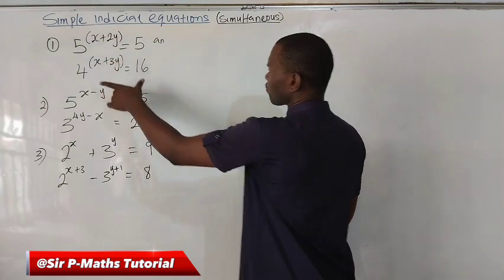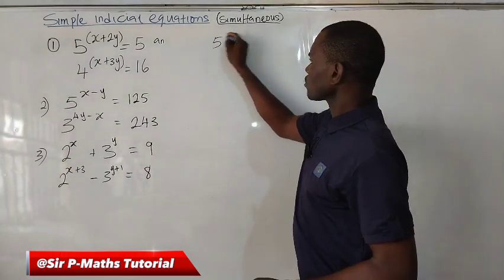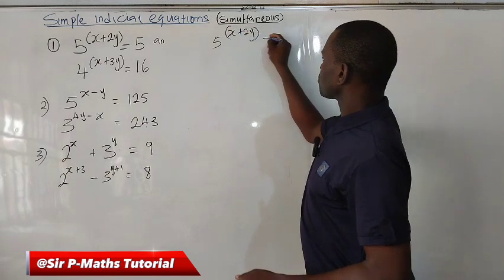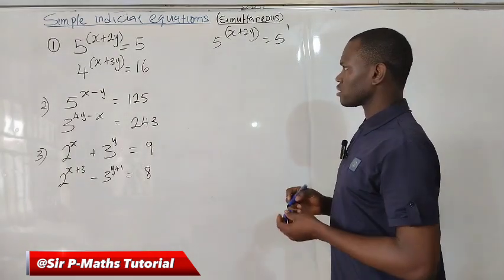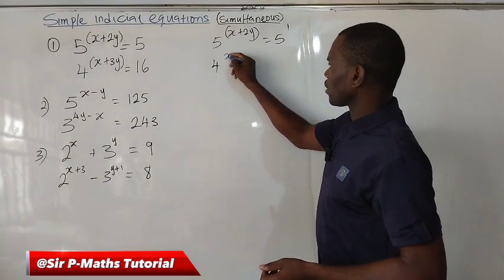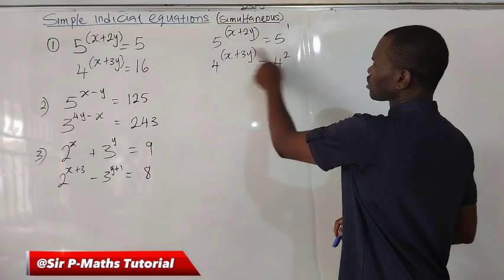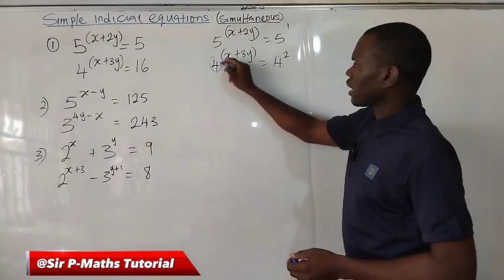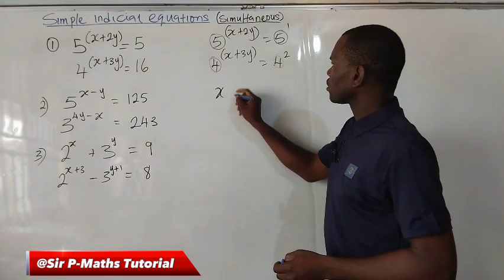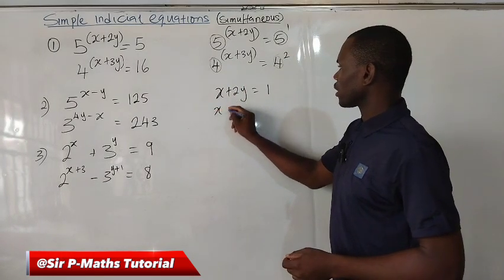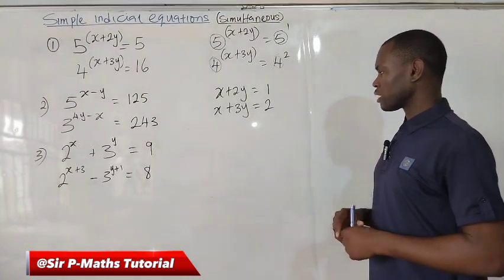Whenever you have the bases of your initial equation to be equal, the next thing you will do is to equate their powers. So from here I have 5 raised to the power of x plus 2y equal to 5 raised to the power of 1 — every number has a natural power which is 1. For the second one, 4 raised to the power of 2 gives us 16, and 4 and 4 are equal bases; 5 and 5 are equal bases. Therefore drop their powers: x plus 2y equals 1, and x plus 3y equals 2. So we have a simple linear equation to solve simultaneously.